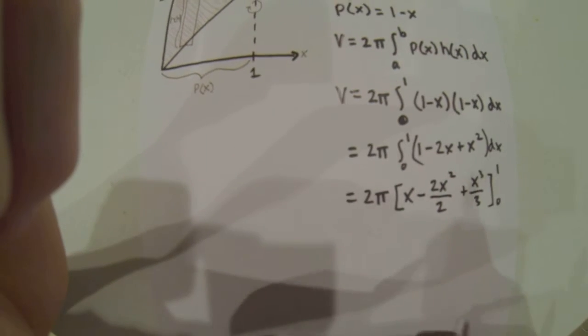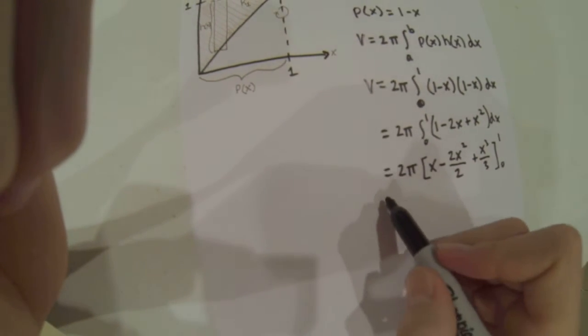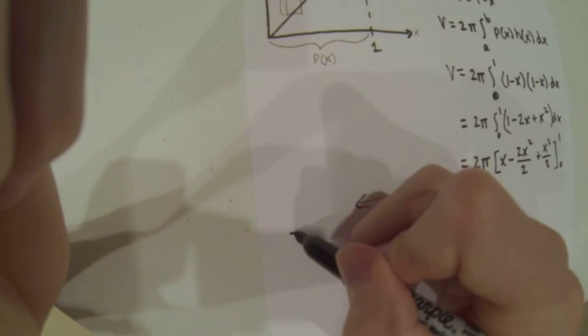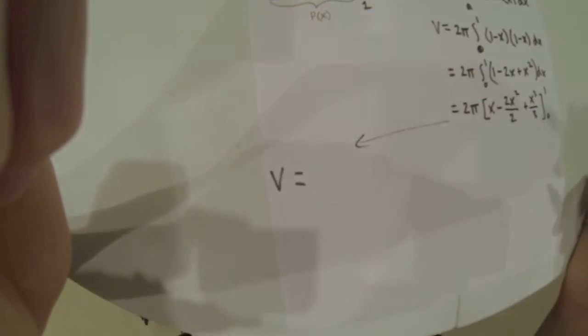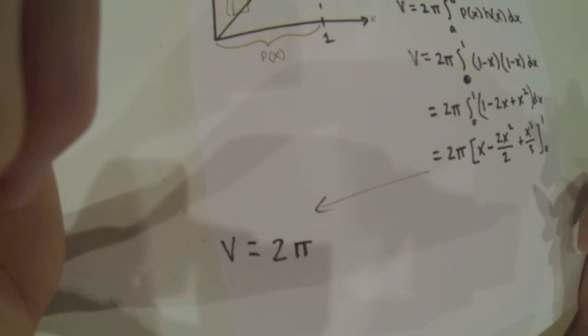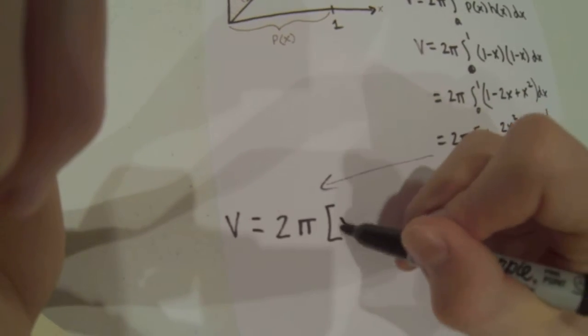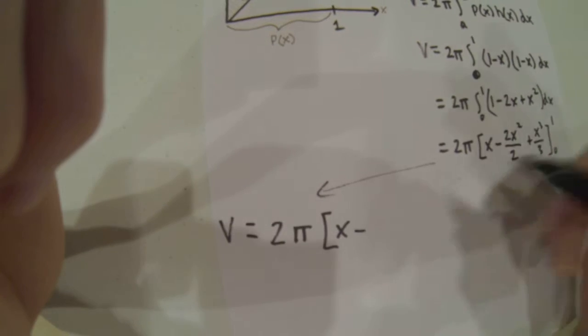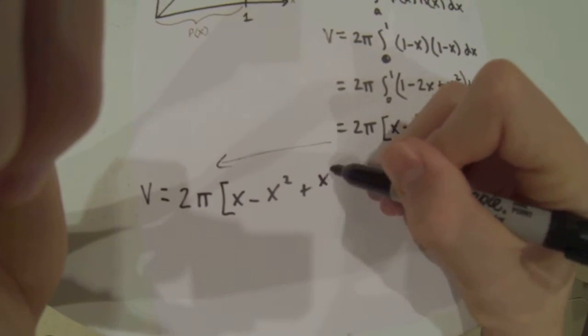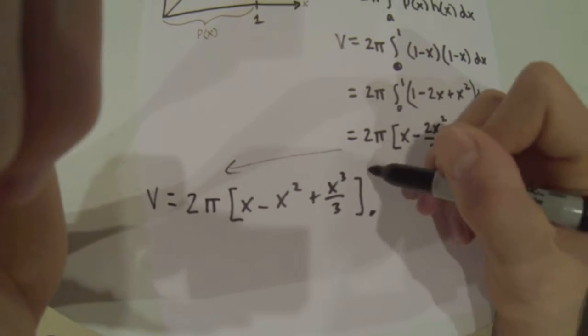So this volume equals 2π times [x minus x squared plus x cubed over 3] from 0 to 1.